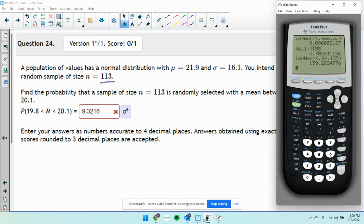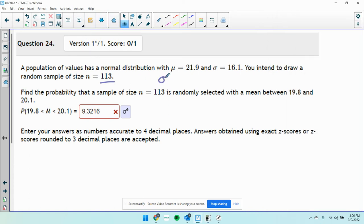You can do it all in the calculator, but just remember we're talking about a sample. So my σ has to be σ of x̄, which is equal to 16.1 over the square root of the sample size.